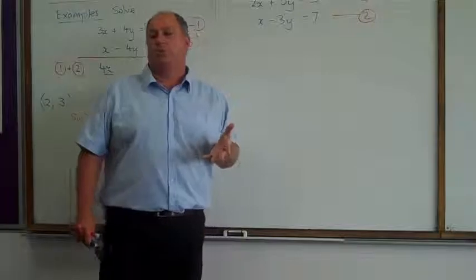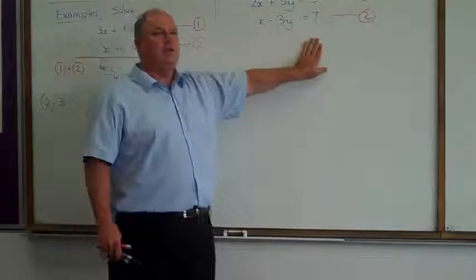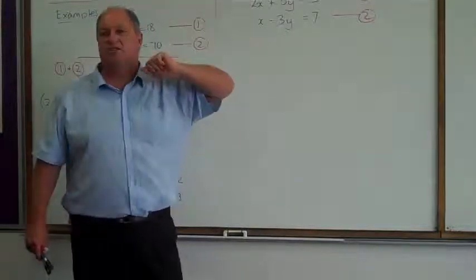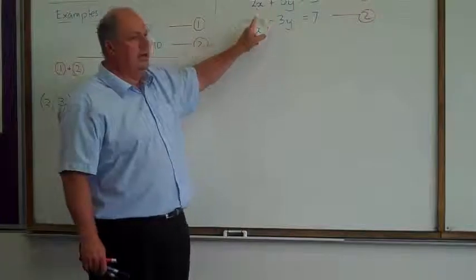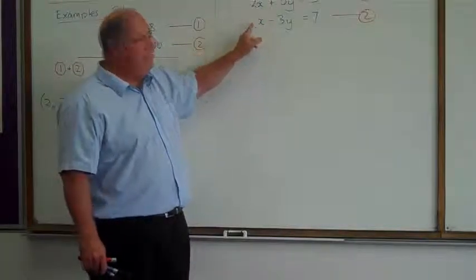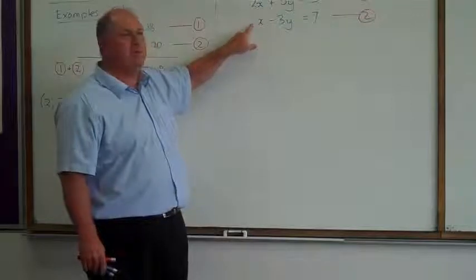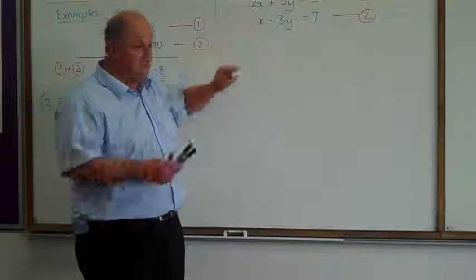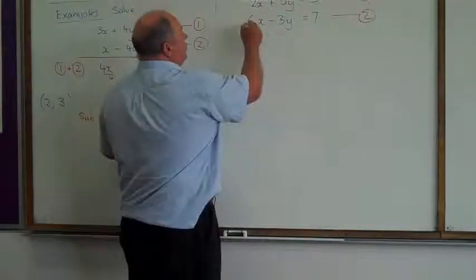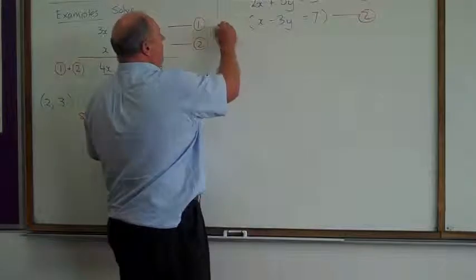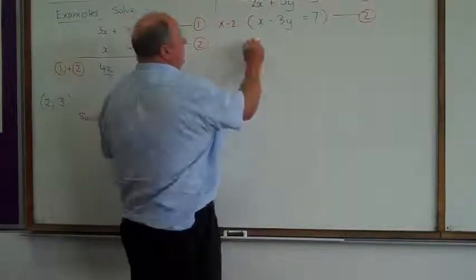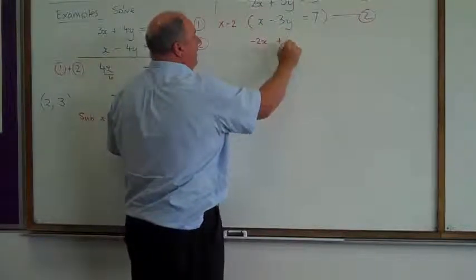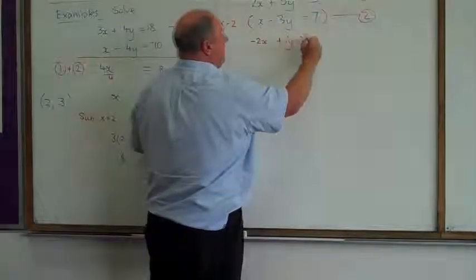So, what we do is we do a little trick. We change one of the equations by multiplying. Now, best things to decide in this case here, I'm going to get rid of the x's. I'm going to eliminate them. To eliminate the x's, what does this x have to become? What number would have to be in front of this? Negative 2. So, what we do is we change that whole equation by multiplying by negative 2. So, this is going to become negative 2x. Negative 2 times negative 3 makes plus 6y. Negative 2 times 7 is negative 14.